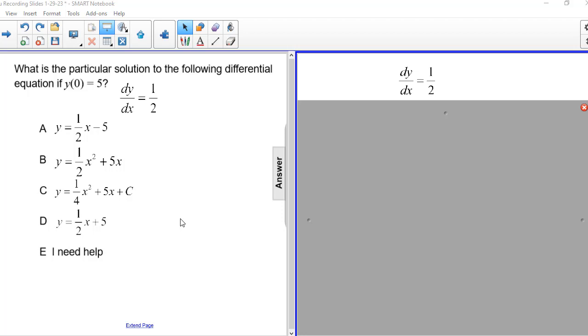Let me now refer to your attention to the right side of the screen where I'm going to multiply both sides by dx. This is going to give me dy is equal to 1 half dx.